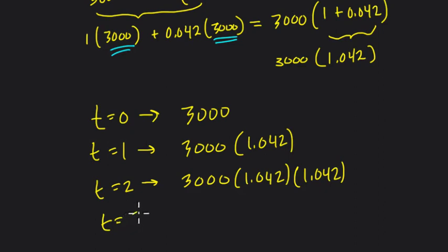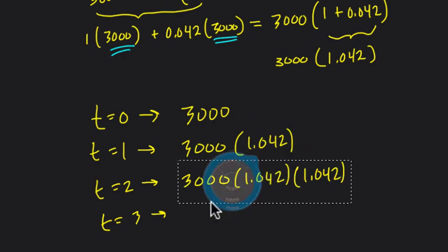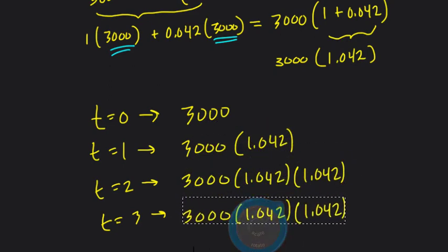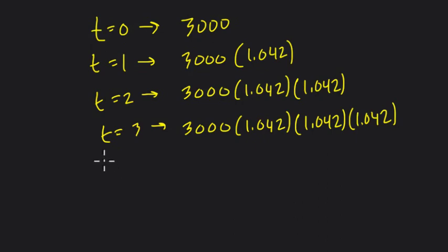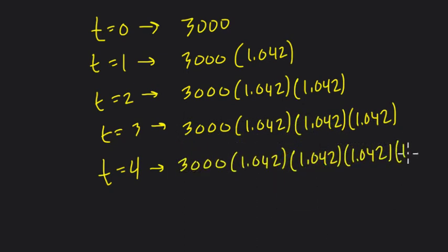Now, after 3 years, what's going to happen? Well, we repeat this process again. It's going to be that amount of money times another 1.042 in 3 years. And let's just do one more. After 4 years of interest, we have this amount of money again. We copy and paste this whole thing, whatever it was, times another 1.042. Notice something.